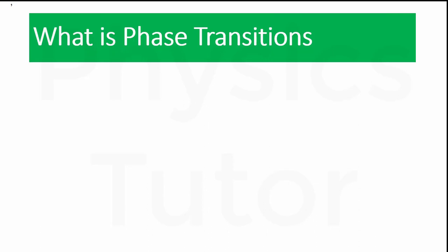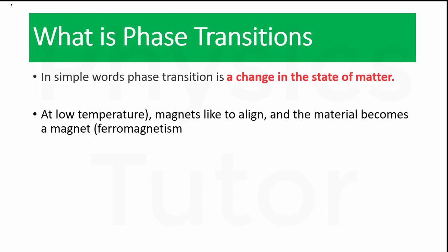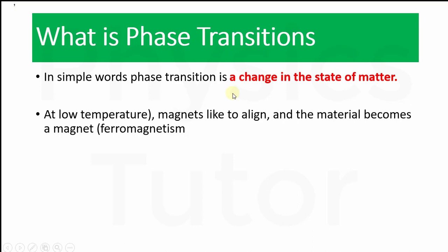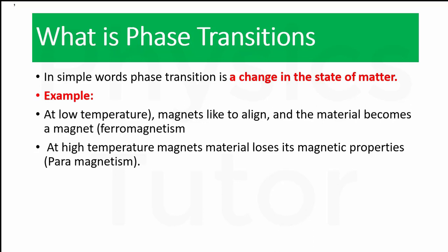Phase transition is a change in the state of matter. State of matter can change with respect to temperature. At low temperature, magnets like to align and the material becomes a magnet like a ferromagnetic material. When temperature is increased, the magnetic material loses its magnetic properties, like paramagnetic material. Ferromagnetic substances bear the most temperature and have the highest alignment rate.